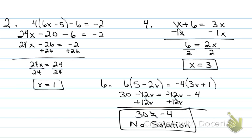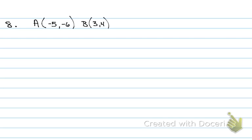As soon as my variables cancel out — and this is true for systems too — I know it's either no solution or infinite solution. We'll talk about systems in a later section of the review. Now, number eight: translations, rotations, and all that fun stuff.